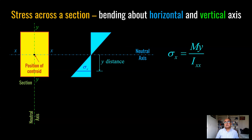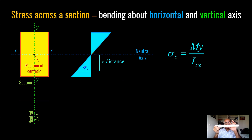Sigma X, stress in the X direction, is equal to M — the applied moment — times Y, which is the distance from the neutral axis, divided by I-XX, the second moment of area. This is the stress in the major axis direction. If you hold a ruler in the strong orientation and apply loading, it is really very stiff. This is the major axis.